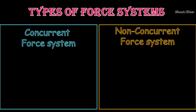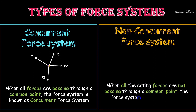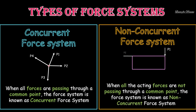The next two types of force systems are concurrent force system and non-concurrent force system. When all forces are passing through a common point, the force system is known as concurrent force system. In this diagram you can see all forces are passing through a single point. When all the acting forces are not passing through a common point, the force system is known as non-concurrent force system. Here you can observe that all five forces P1, P2, P3, P4 and P5 are acting on different points.